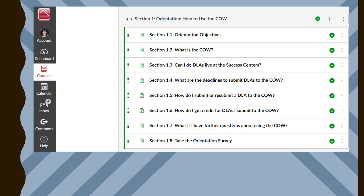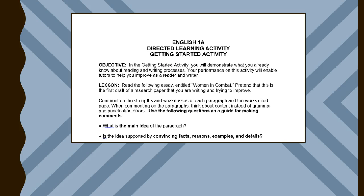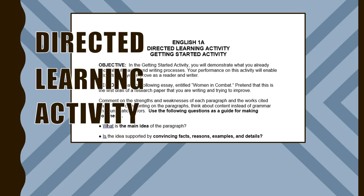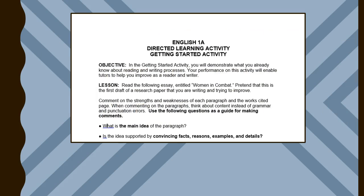After students complete an orientation to the CAL, they can begin doing supplemental learning activities. If a student decides to do activities online, he or she can download a Directed Learning Activity, or DLA, from the CAL. After completing the DLA and submitting it to assignments, a student will receive video feedback from an English tutor in one to seven days.